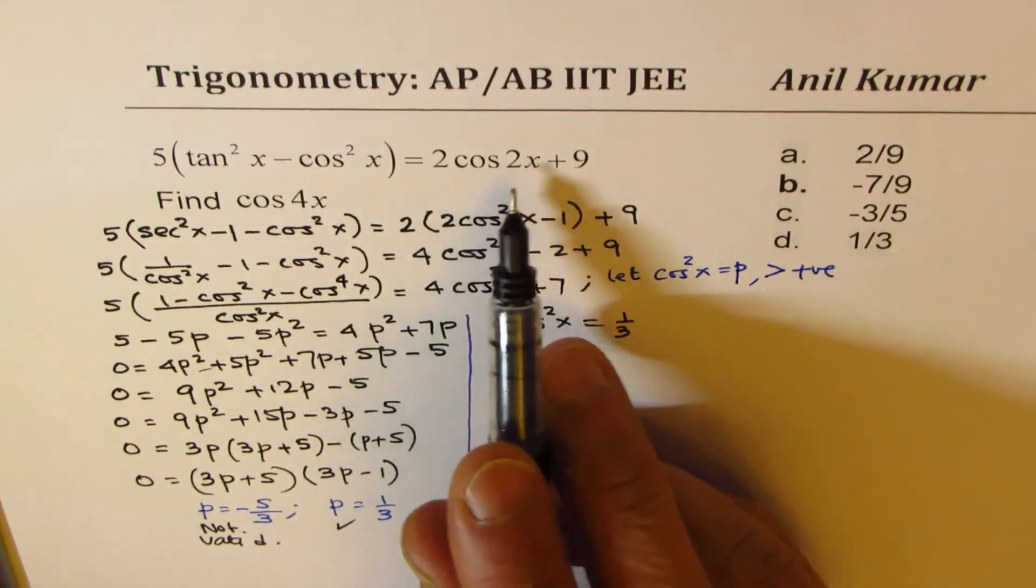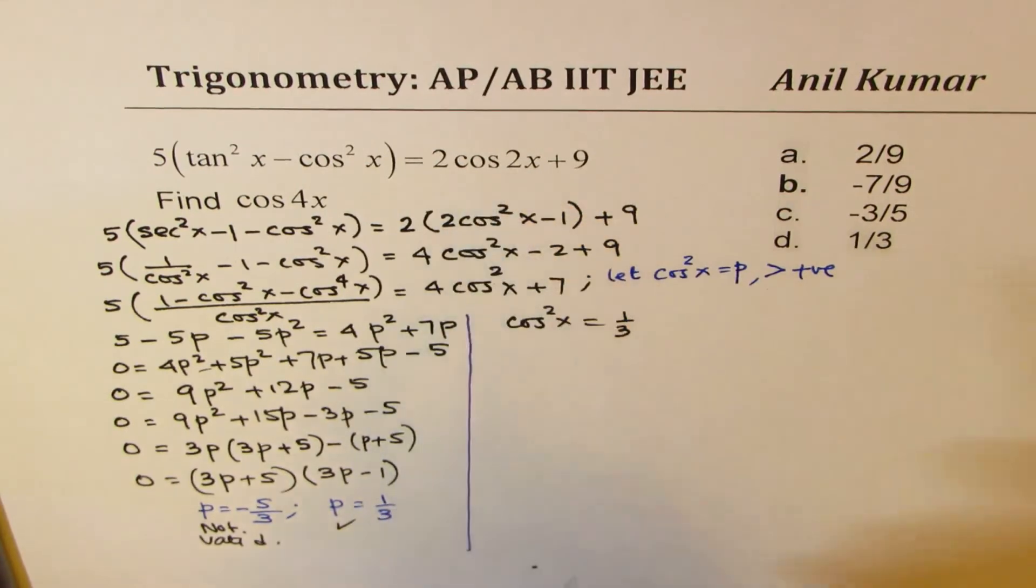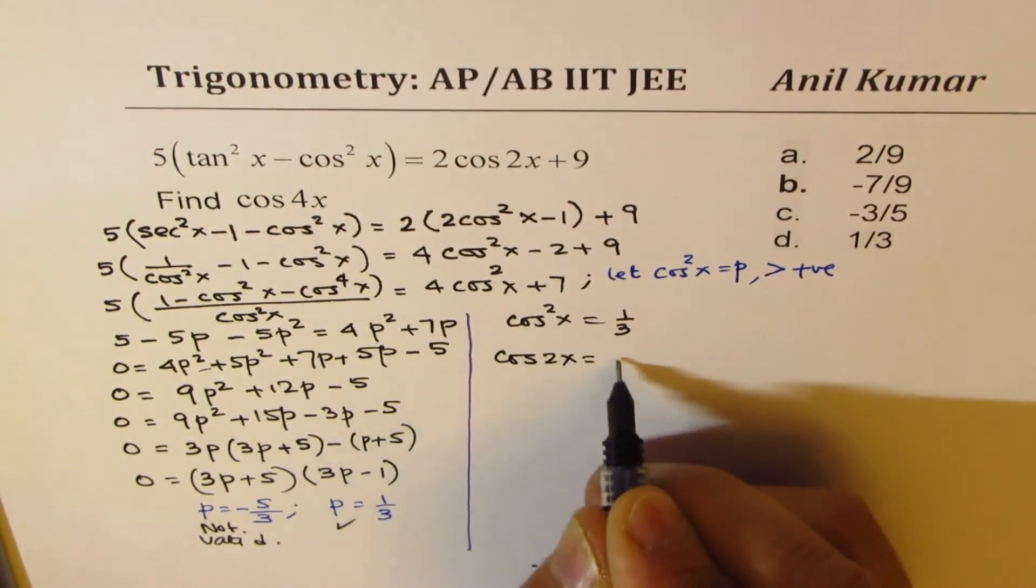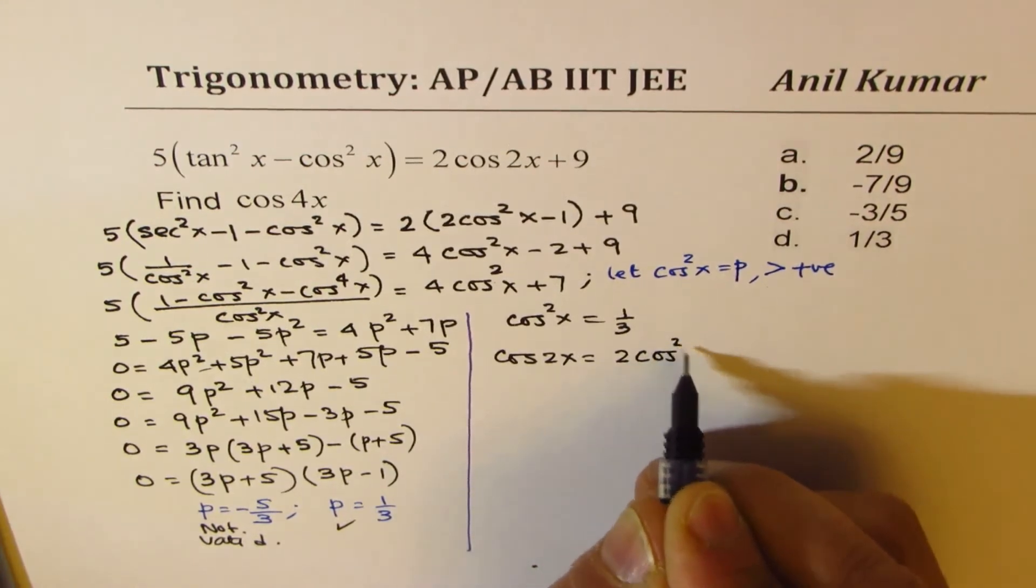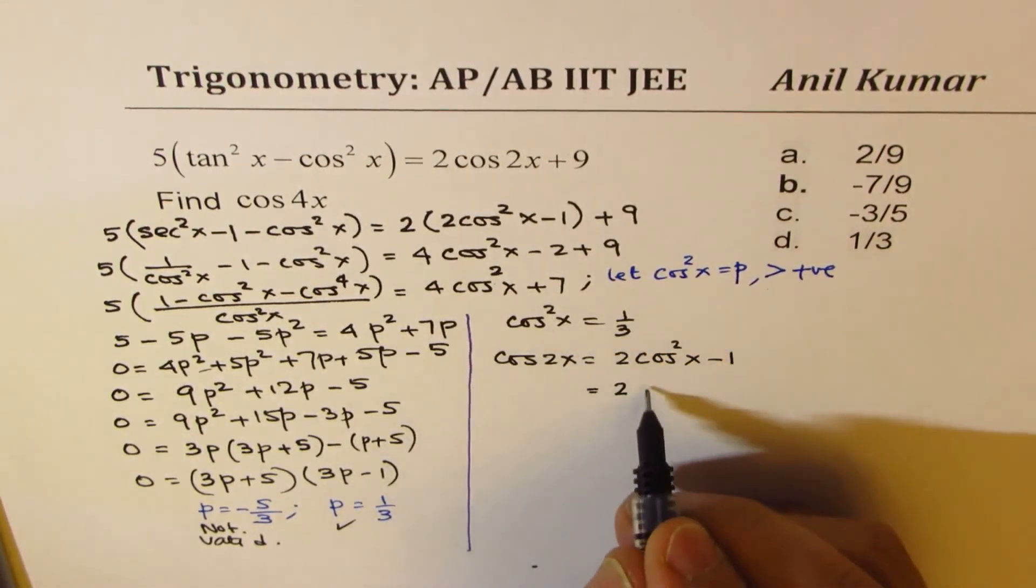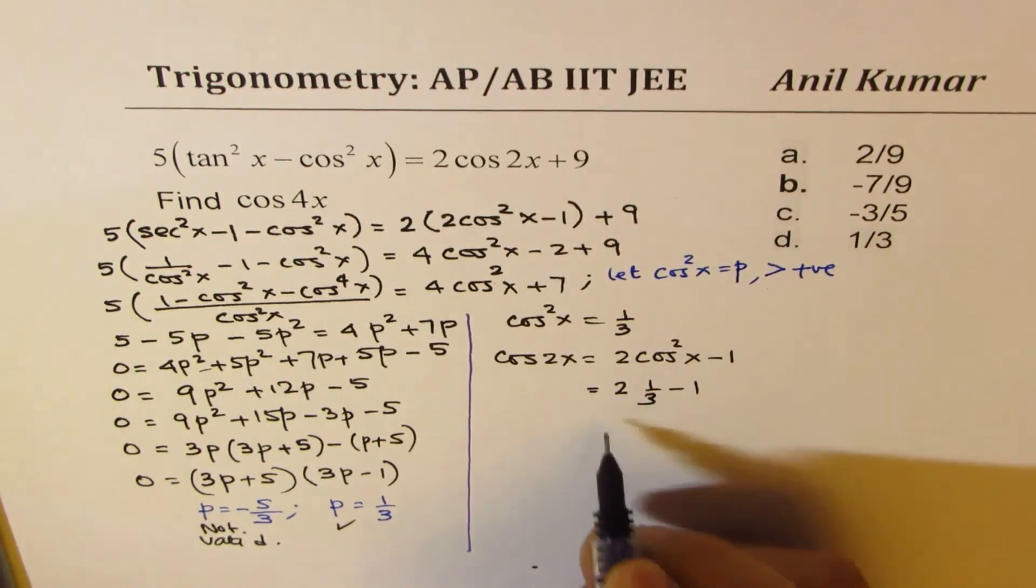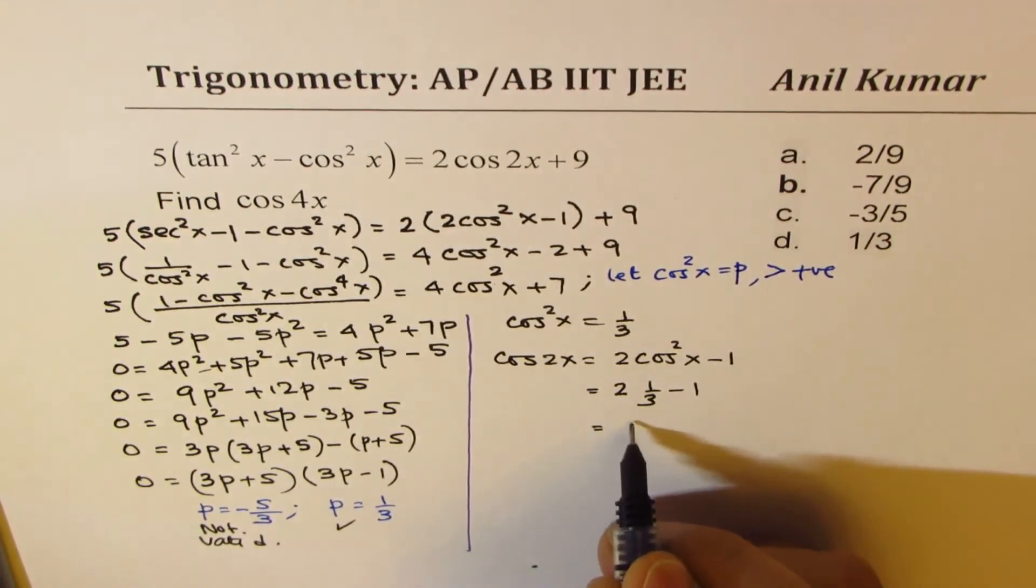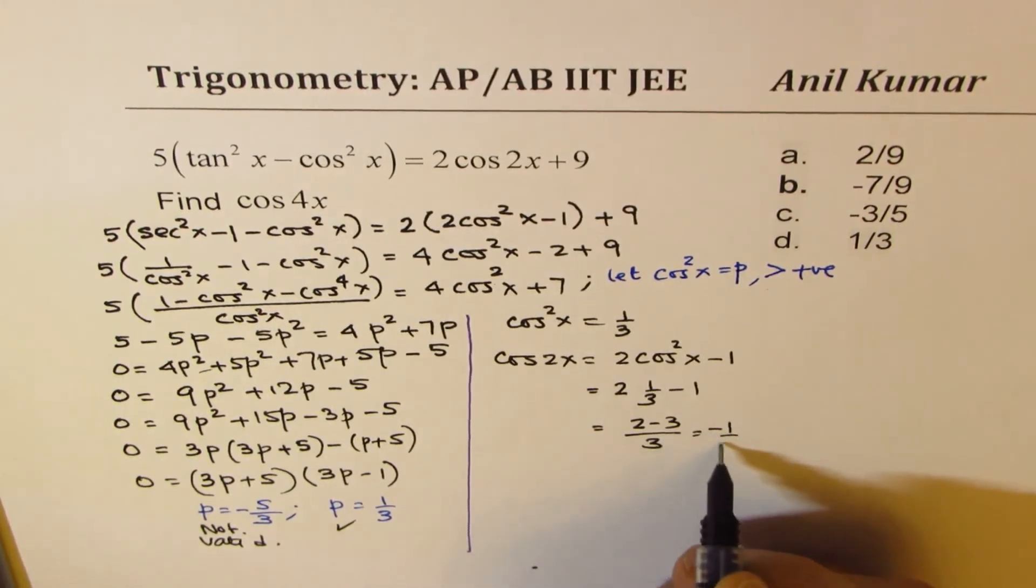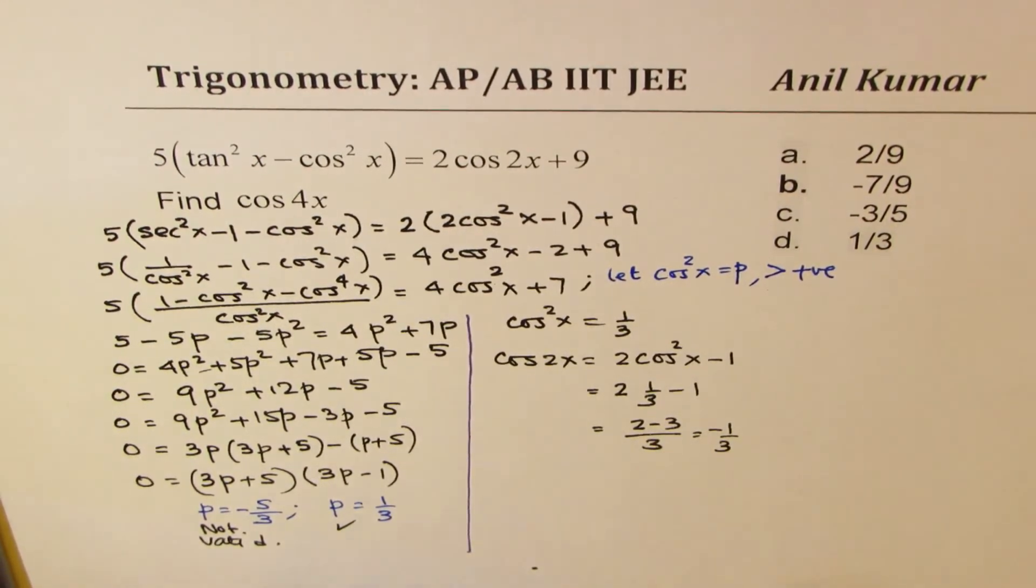Now, we can find what cos 2x is. So cos 2x, which is 2 cos square x minus 1, is 2 times 1 over 3 minus 1. And that is 2 minus 3 over 3, or minus 1 over 3. So that is cos 2x.